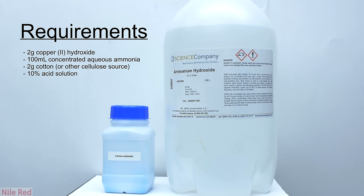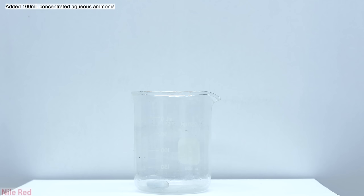On top of the ingredients that we need to make the actual Schweitzer's reagent, we also need a source of cellulose, something like paper or cotton. Anyway, to get things started, we pour in about a hundred milliliters of aqueous ammonia into a beaker. Then directly into the aqueous ammonia, we pour in about two grams of copper hydroxide.